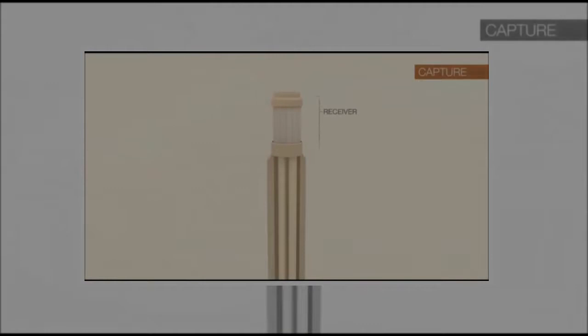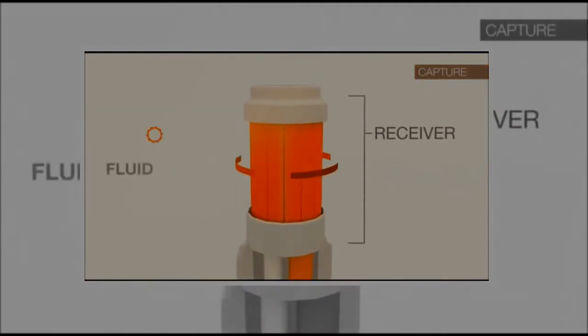Within the receiver, fluid flows through the piping that forms the external walls. This fluid absorbs the heat from the concentrated sunlight.